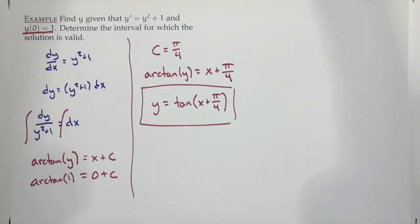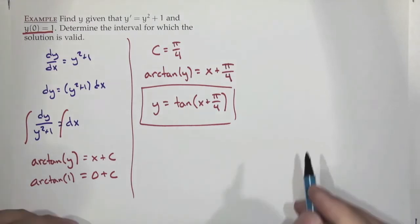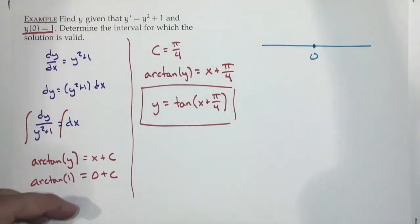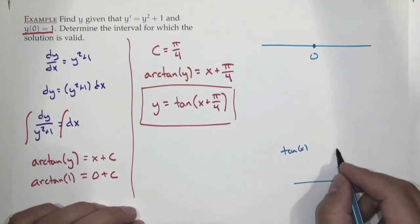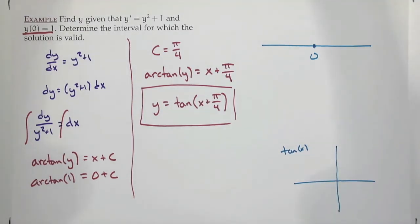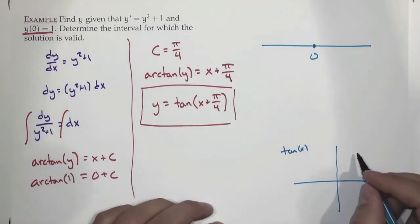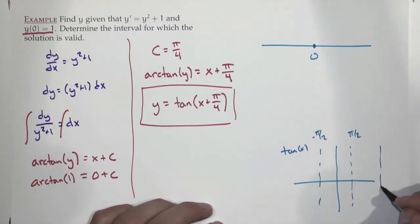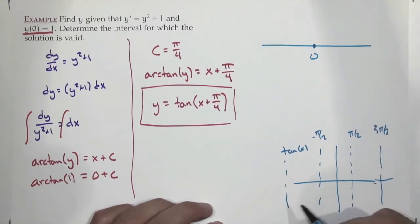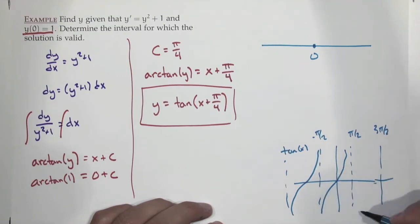But this solution isn't going to be valid everywhere, given the second part of the question asks where it's valid. We know it's valid at 0 since we start there. Tangent has lots of asymptotes — at ±π/2, ±3π/2, and so on, equally spaced.